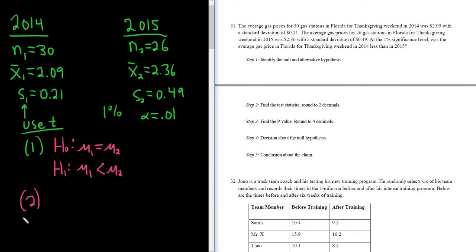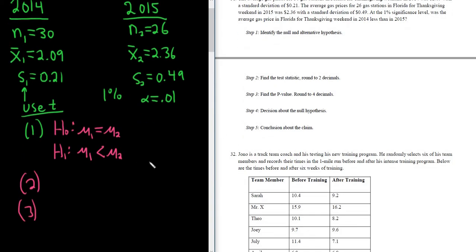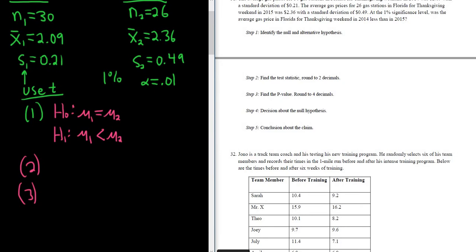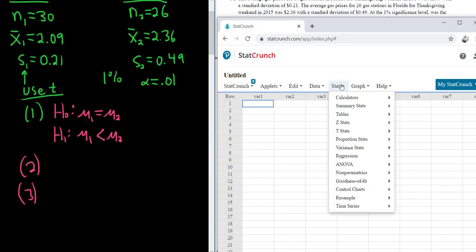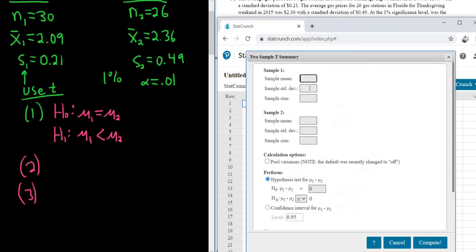Step 2 and 3 are StatCrunch steps. It wants the test statistic and the P value. So let's go ahead and go to StatCrunch and type everything in. Because they didn't give us the population standard deviation, we're going to use T for this problem. So you go to stat, T stats, and then we have two samples, and then it's with summary. All right, so now we can type everything in. So the sample mean is 2.09. Be really careful in this step. You know, just take your time.